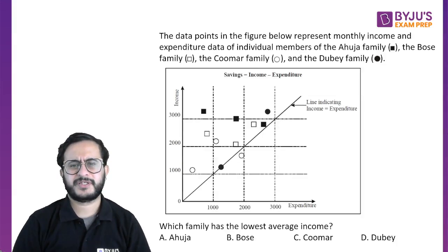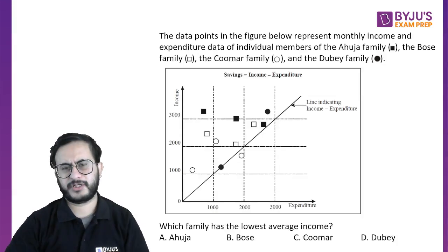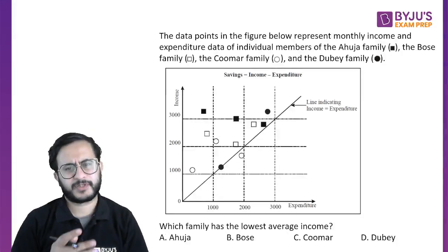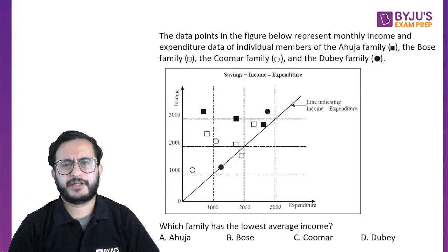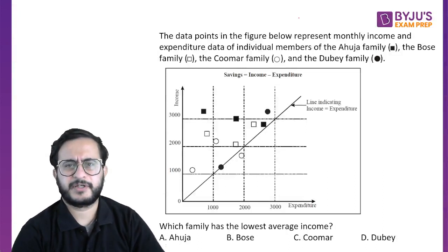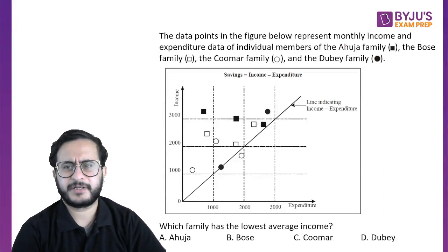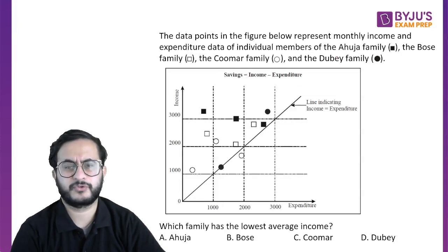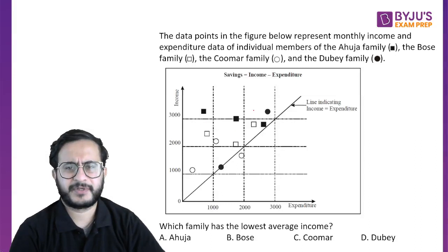This was a question based on a scatter plot. The data points in the below figure represent monthly income and expenditure data of individual members of the Ahuja family, the Bose family, the Kumar family, and the Dube family. These are the four families represented in the graph.